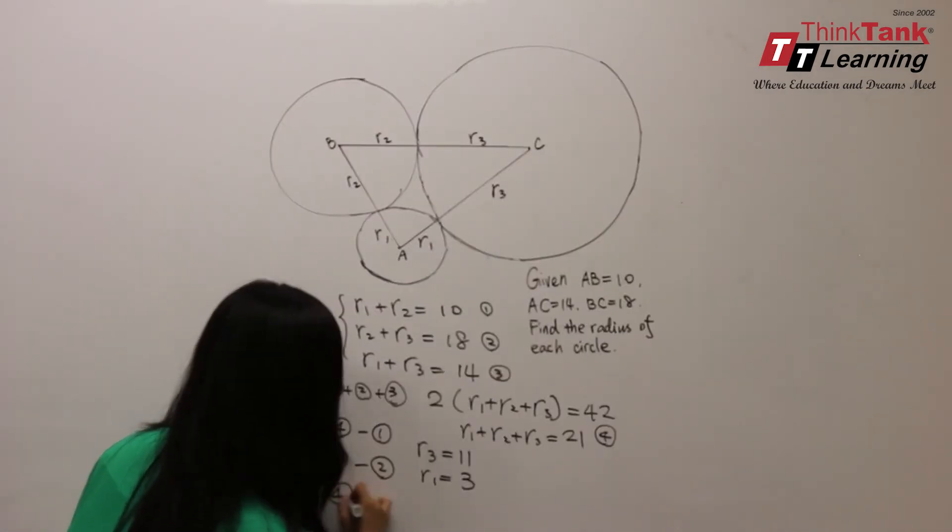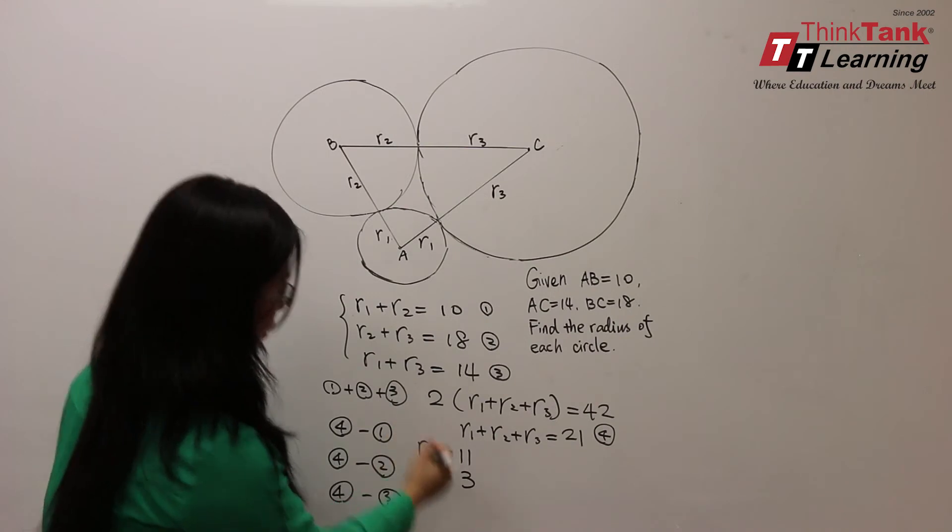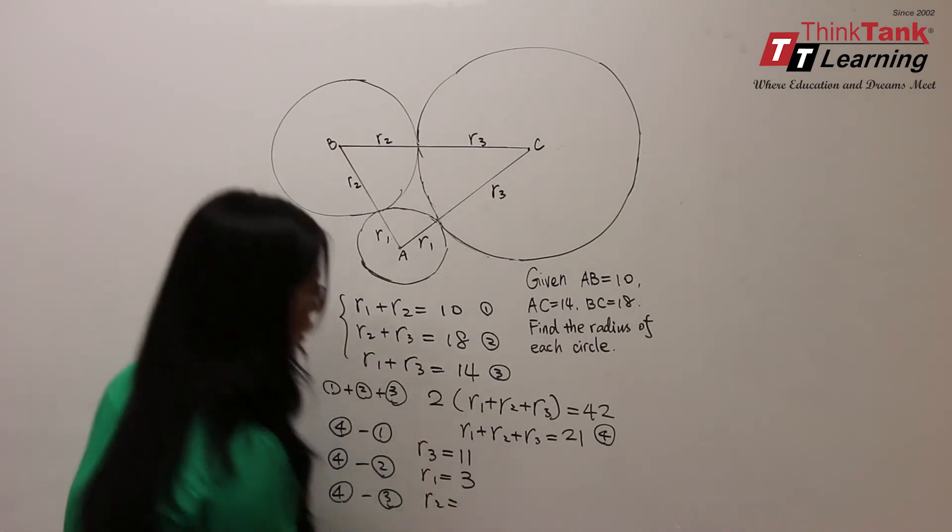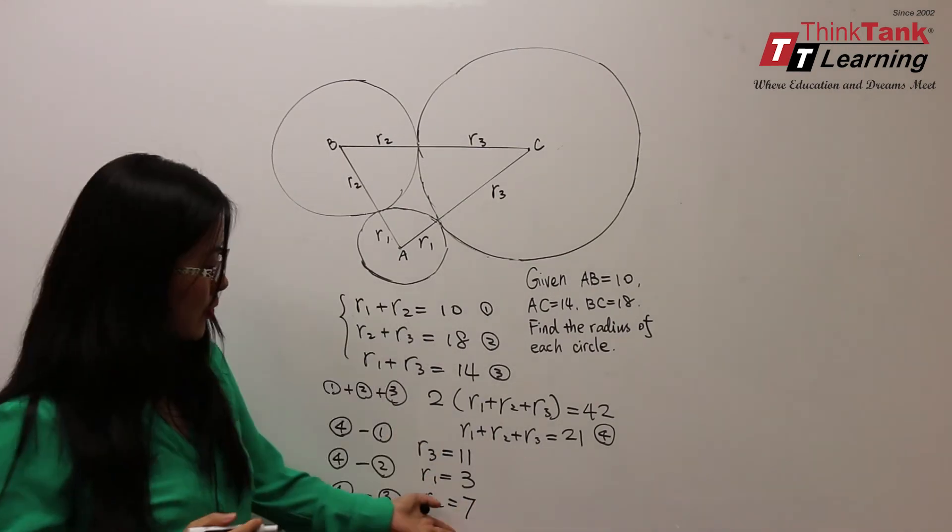And equation 4 minus equation 3 to get R2 equals 7. So this is the answer.